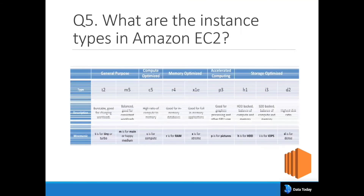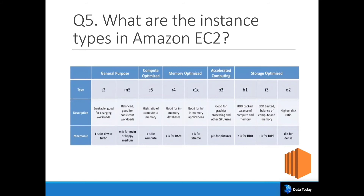The next question is about EC2 instance types. The types are: General Purpose, Compute Optimized, Memory Optimized, Accelerated Computing, and Storage Optimized. General Purpose instances like t2.micro are low cost and suited for any type of workload — hosting websites, running Docker, or smaller tasks. The m5 is balanced and good for consistent workloads. Compute Optimized instances have a high compute-to-memory ratio for faster computation.